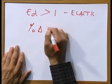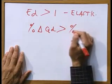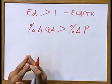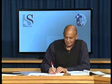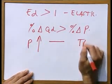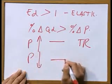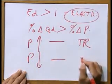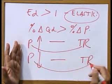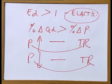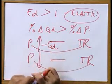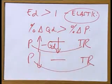When the demand is elastic, the percentage change in the quantity demanded is greater than the percentage change in the price. If the seller wants to increase the price, what will happen with total revenue? If the seller wants to decrease his price when the demand for his product is elastic, what will happen with total revenue? We need to determine this relationship between price and total revenue when the demand is elastic. When the price goes up, quantity demanded goes down — that is according to the law of demand. Price and quantity demanded are inversely related.